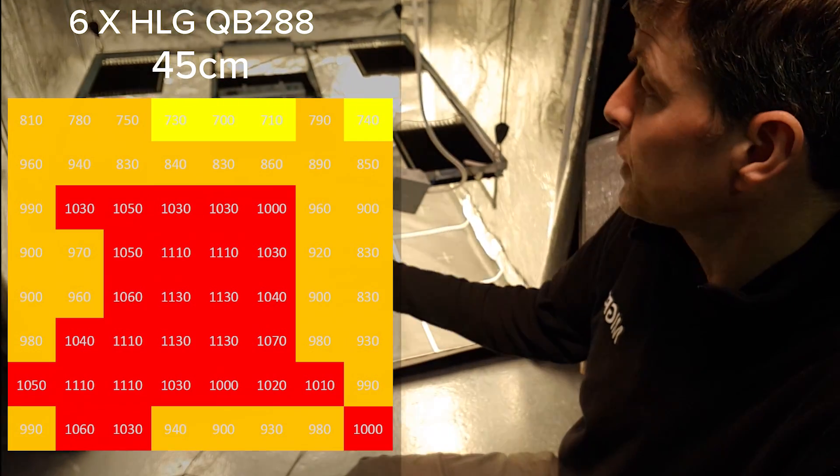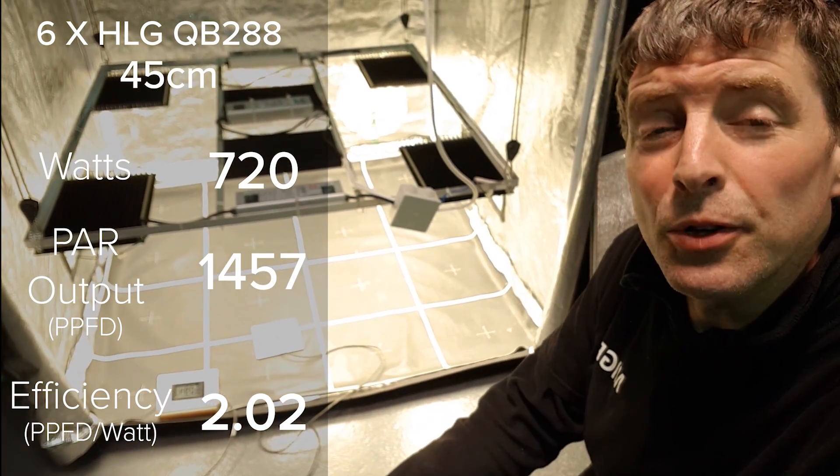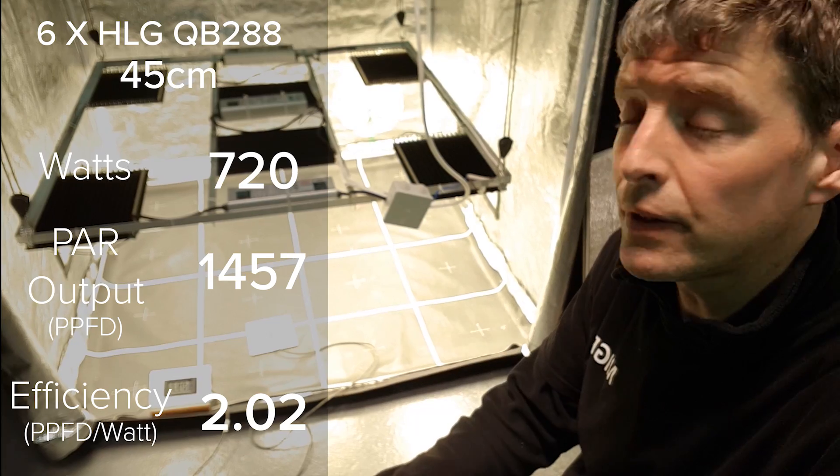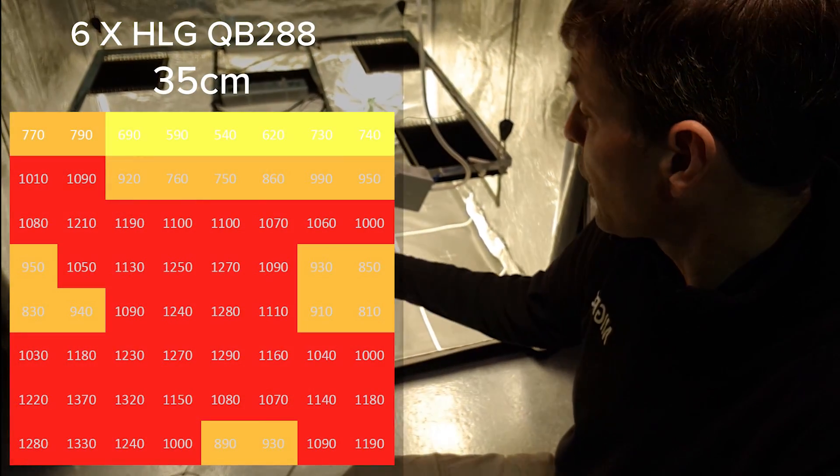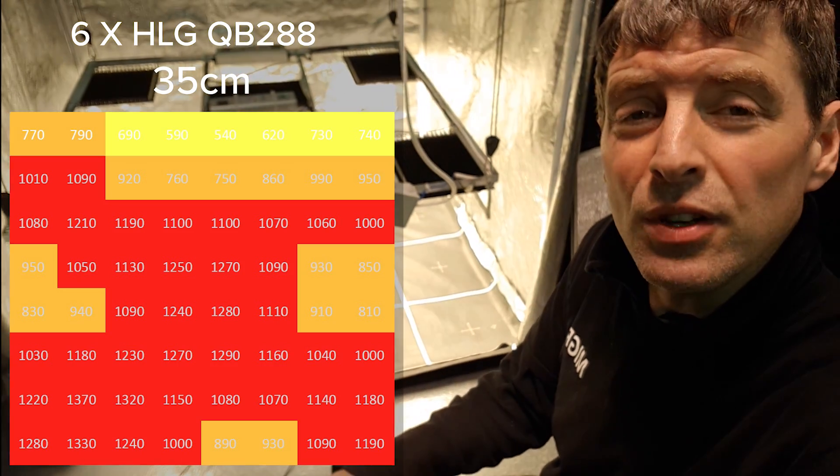At 45 centimeters height, 720 watts, it's 2.02 micromoles per watt PPFD per watt efficiency at that height, which is excellent. We did hang it a little bit lower at 35cm, efficiency was great at 2.2 PPFD per watt.